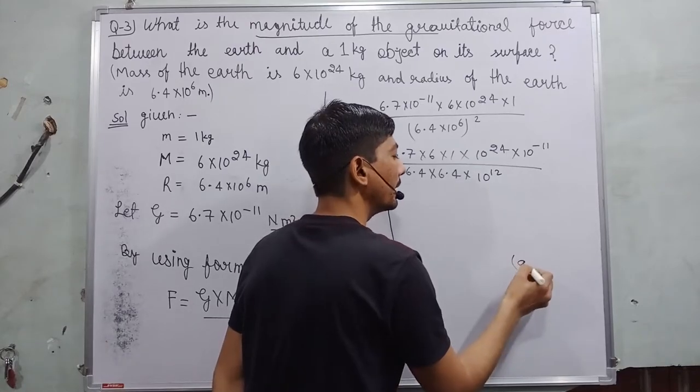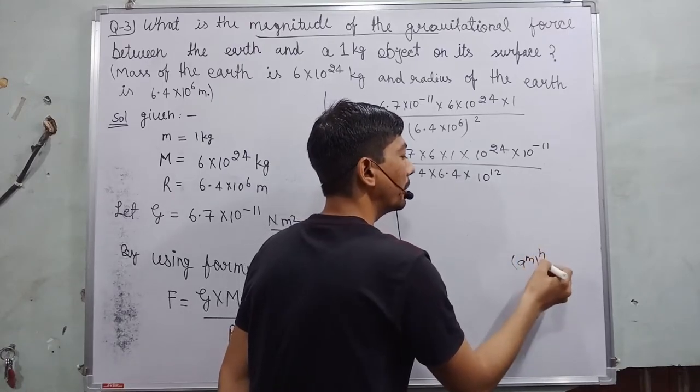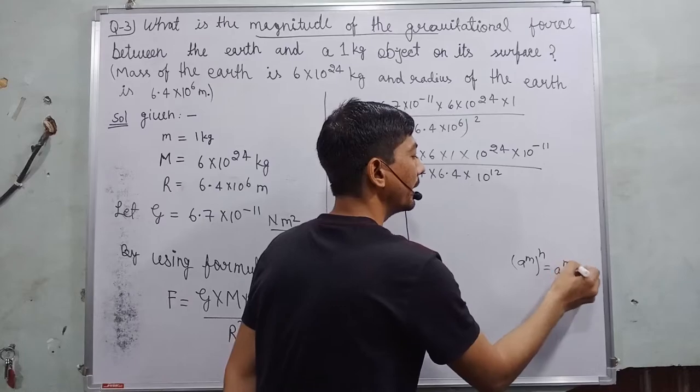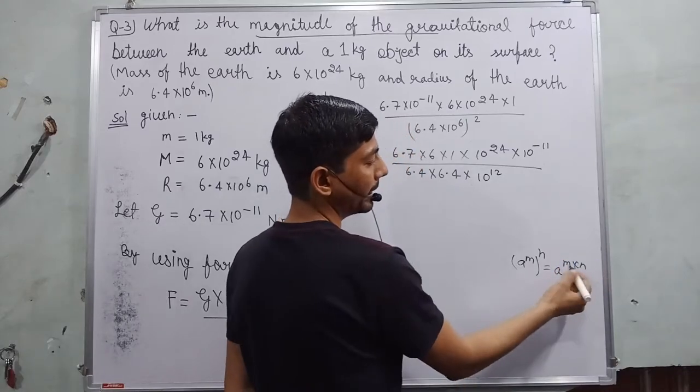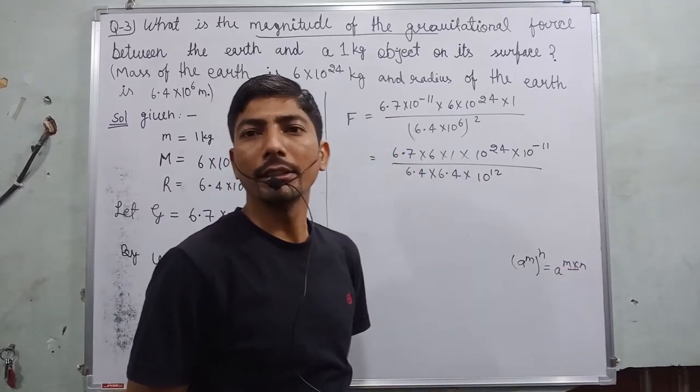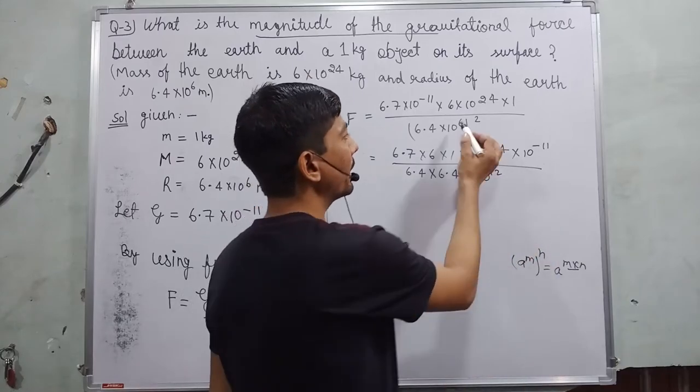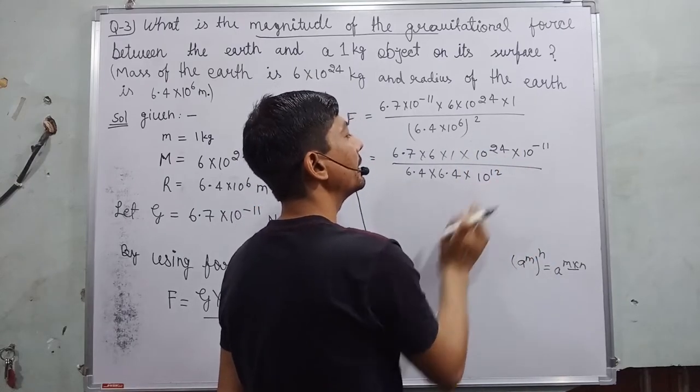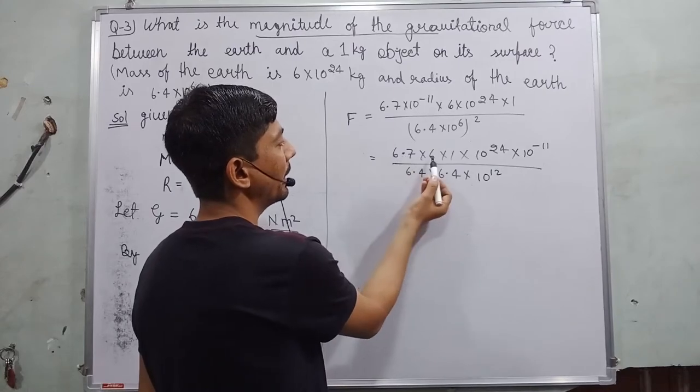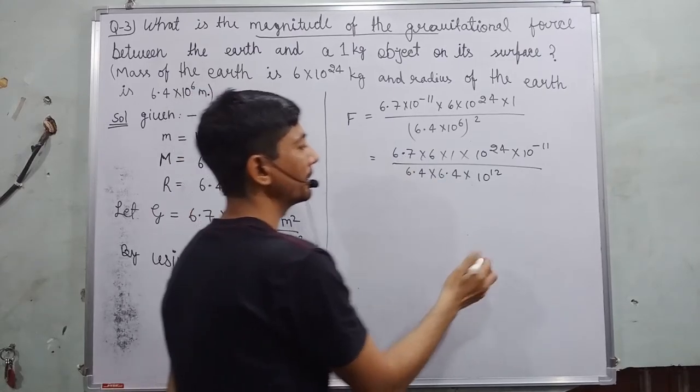How? If you write a raised to the power m raised to the power n, then you find a raised to the power m × n. So in this case, power power will multiply. That's why we multiply 6 to the 12 and find here 10¹². After that, I multiply all these. So I do rough here.